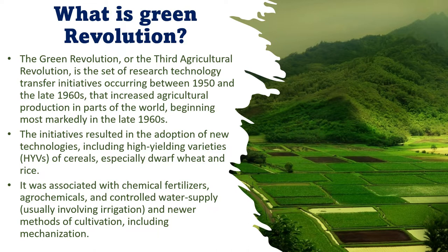It can also be defined as the renovation of agriculture practices which began in Mexico in the 1940s and spread to other parts of the globe in the 1950s and 60s, resulting in more agriculture products and increasing the amount of calories produced per acre of land. Researchers in Mexico developed broadly adapted, short-stemmed, and disease-resistant varieties of wheat that did extremely well in converting fertilizers and water into high yields.